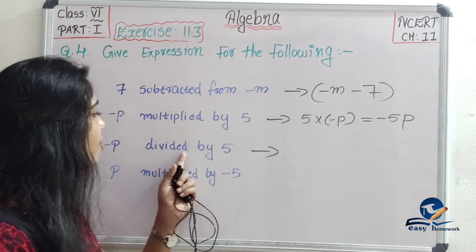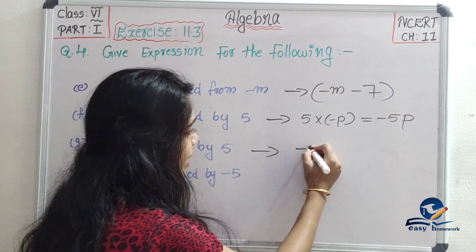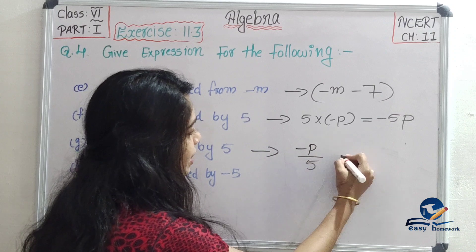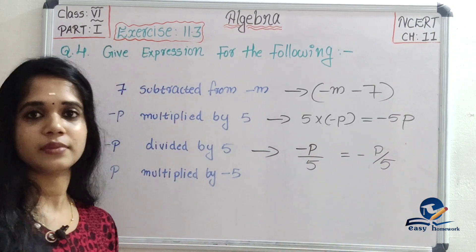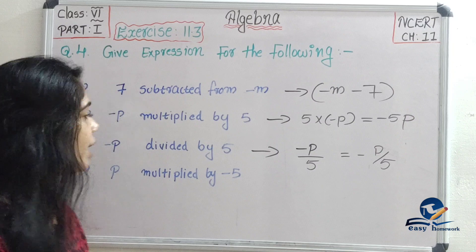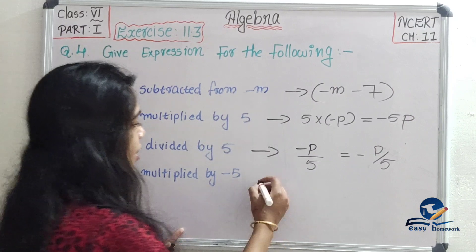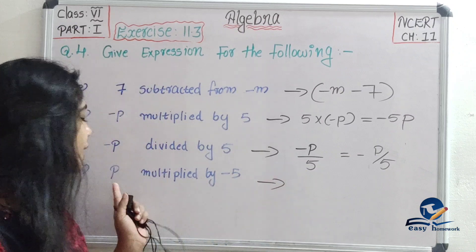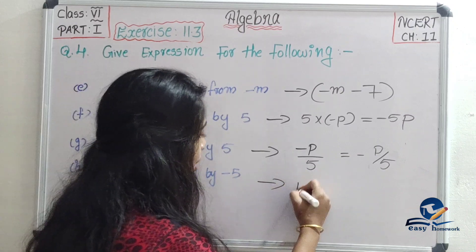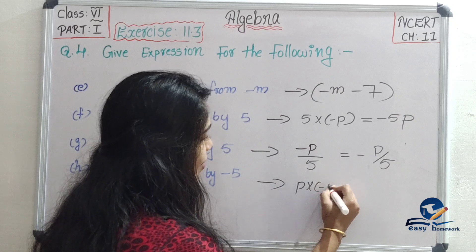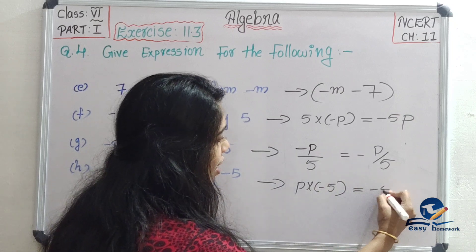Minus p divided by 5 gives minus p by 5. Next, p multiplied by minus 5: p into minus 5, and the answer is minus 5p.